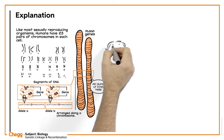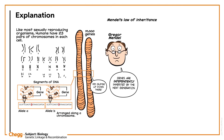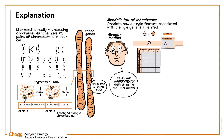According to Mendel's Law of Independent Assortment, genes are independently inherited by the next generation and are not affected by the inheritance of any other gene. He illustrated this law by crossing two pure-breeding pea plants of differing color and shape, and discovered four different offspring from the original genetic pair.